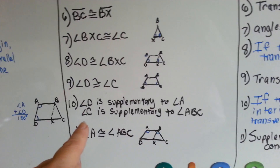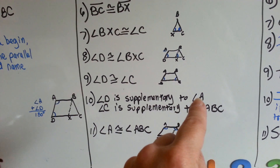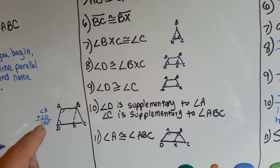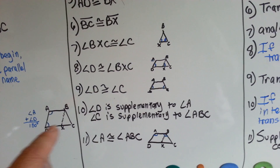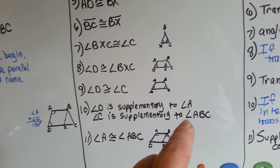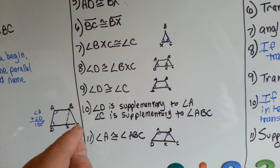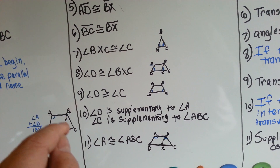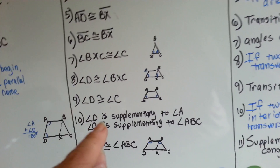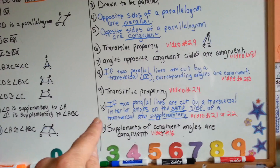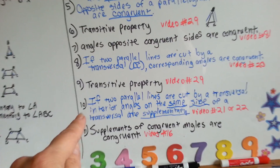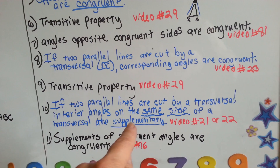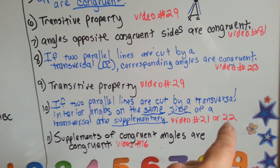Number 10: angle D is supplementary to angle A, because A and D are supplementary angles — they total 180 degrees. Angle C is supplementary to angle ABC — that one and that one total 180. Our reasoning is: if two parallel lines are cut by a transversal, interior angles on the same side of a transversal are supplementary. Watch videos number 21 and 22 — that'll explain it.